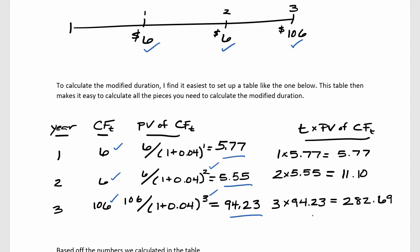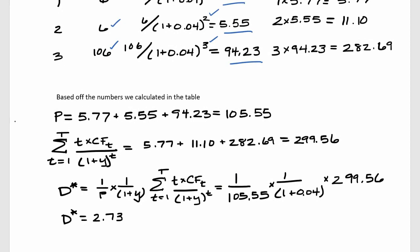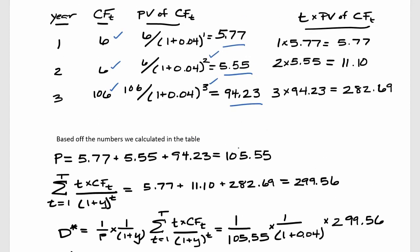The reason I like to set up these problems in a table is because we can now very easily calculate the price and use that to calculate the modified duration. We find the price by simply adding up the present values of all the cash flows — summing 5.77, 5.55, and 94.23 — so the price of this bond is 105.55.